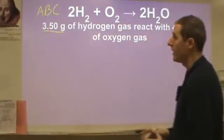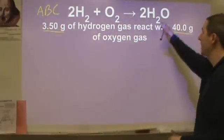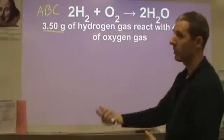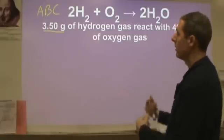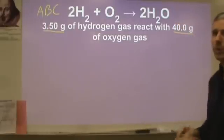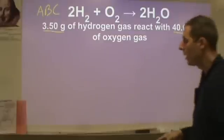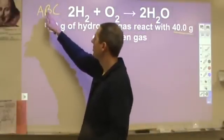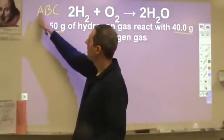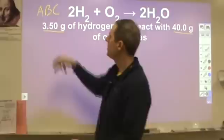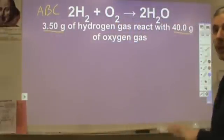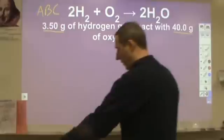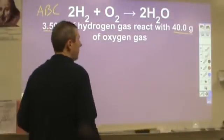The second question is: how much product will you make — how much steam in this case? And the last question is: how much extra of the one reactant will I have? There are only three questions that can be asked, though with multiple products you can have multiple calculations. But it's really just a simple ABC question, and there's a very systematic, easy way to do all of these.